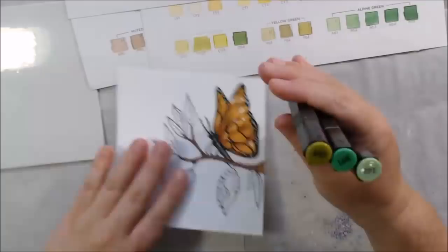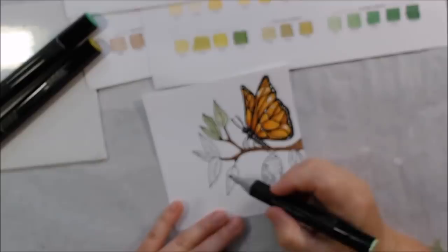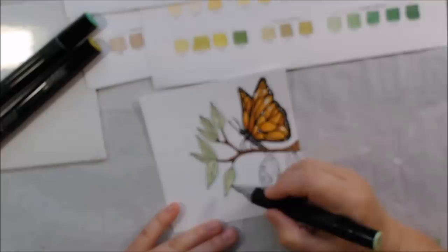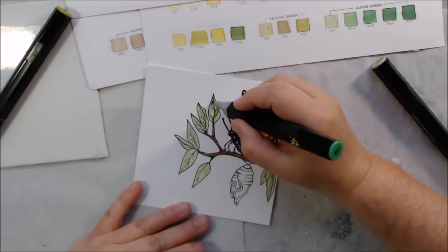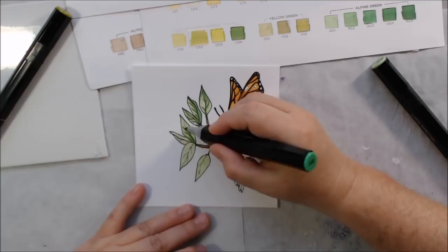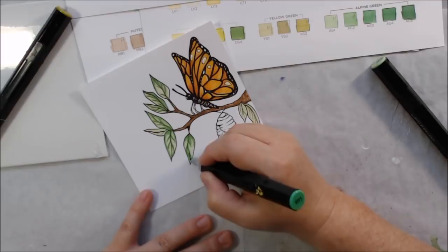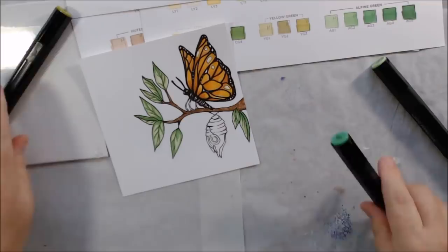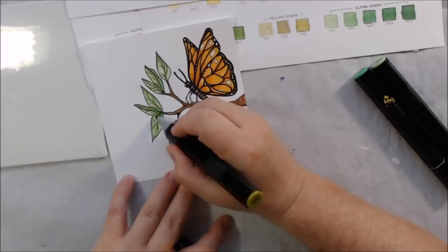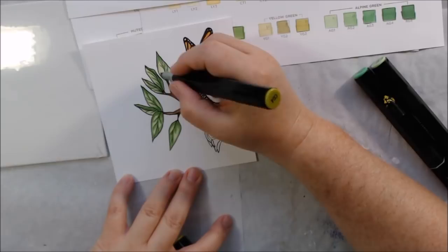I have all these charts of all the colors of markers I have, printed from the Spectrum Noir site, and I filled them in with all the markers. This really helps me because the ends of the markers are not accurate. Having the charts makes a difference—I can pick colors that coordinate in light, medium, and dark ranges.